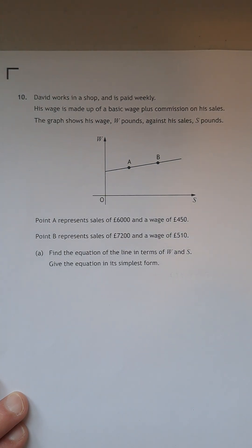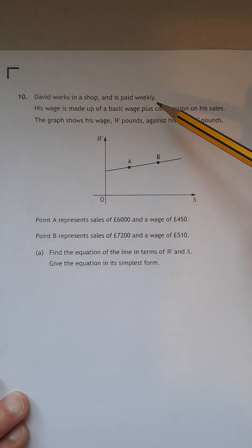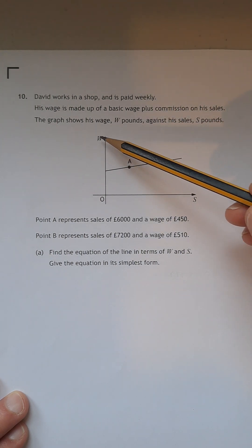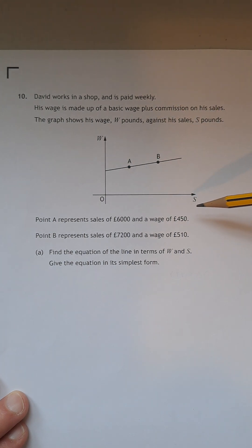Hi guys, Mr. Lise here doing the National 5 Mathematics paper from 2021, paper 1. And we're on to question 10 now where we have David working in a shop and is paid weekly. His wage is made up of a basic wage plus commission on his sales. The graph shows his wage W against S.